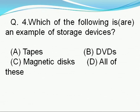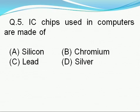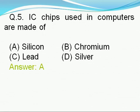Question number 4: Which of the following is an example of storage devices? Option A: tapes, option B: DVDs, option C: magnetic disks, option D: all of these. Right answer is D, i.e., all of these — tapes, DVDs, and magnetic disks are examples of storage devices.